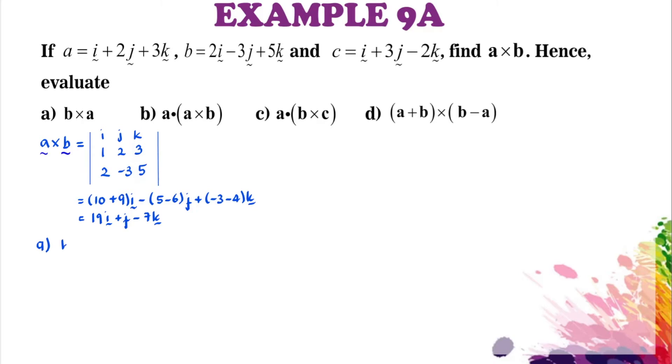Now to evaluate part A using property number 2: B cross A equals negative A cross B. So we just have to put the negative sign into the product of A cross B. So we have negative 19i minus j plus 7k.